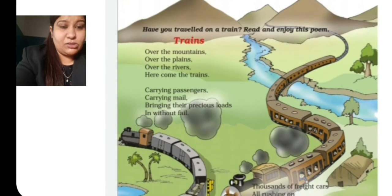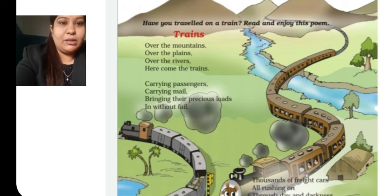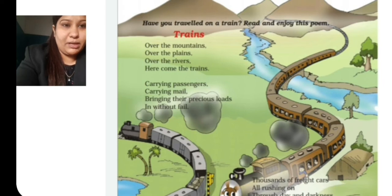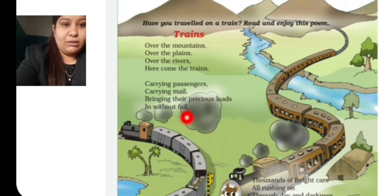Then, 'carrying passengers' — trains carry passengers. 'Carrying mail' — trains carry mail, meaning the parcels, letters and other things people send. 'Bringing their precious loads' — precious loads means things that are important to them: their passengers, their mail, and other people's goods. And 'without fail' means the trains always bring these things, without fail.